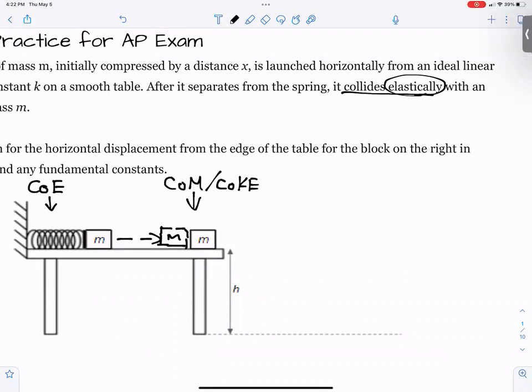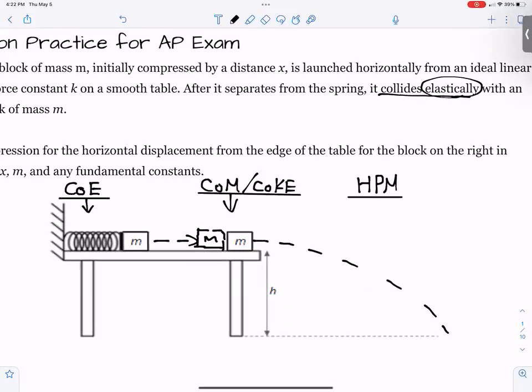So we've got conservation of energy with the spring-loaded mass. We have conservation of momentum and conservation of kinetic energy with the collision. And then finally, the second mass, which is also m, is going to launch off the edge of the table. And so we have what is called a horizontally-launched projectile or horizontal projectile motion. Keep in mind, all of the AP Physics 1 questions are motion-related. It's a motion-related course, a mechanics course. And so the one variable that is going to link every one of these concepts is velocity.